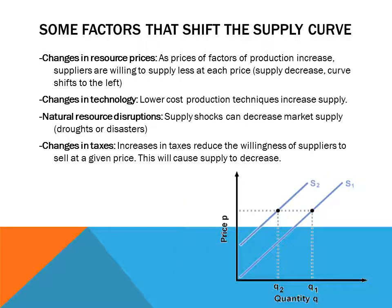We will also study some factors that shift the supply curve left or right. Changes in resource prices: as prices of factors of production increase, suppliers are willing to supply less at each price, and the supply curve shifts to the left. Changes in technology: innovations and new equipment lead to lower cost production techniques, which increase the amount firms want to supply at every price. Changes in natural resources, such as droughts or natural disasters, can decrease market supply. And lastly, increases in taxes will reduce the willingness of suppliers to sell at every given price, causing supply to decrease.